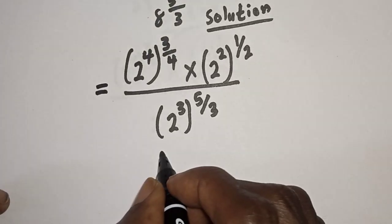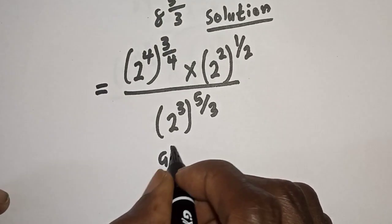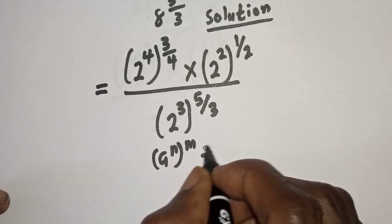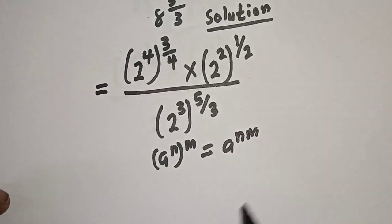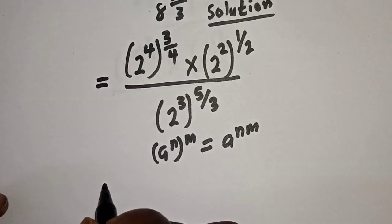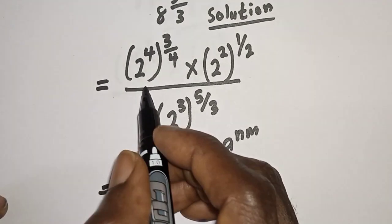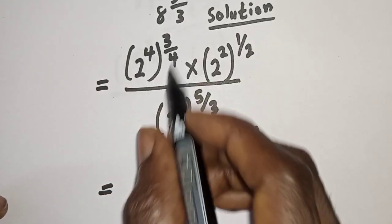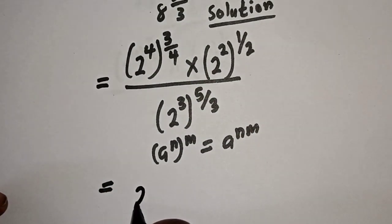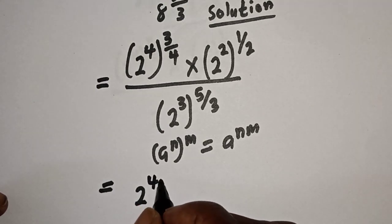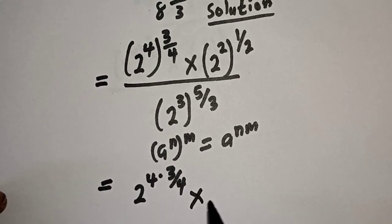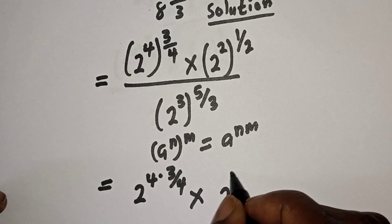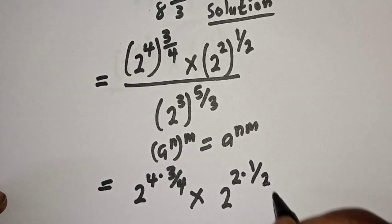Take note of this rule: a raised to power n, to the power of m, is equal to a raised to power n times m. Then this becomes 2 raised to power 4 multiplied by 3 over 4, multiplied by 2 raised to power 2 multiplied by 1 over 2.